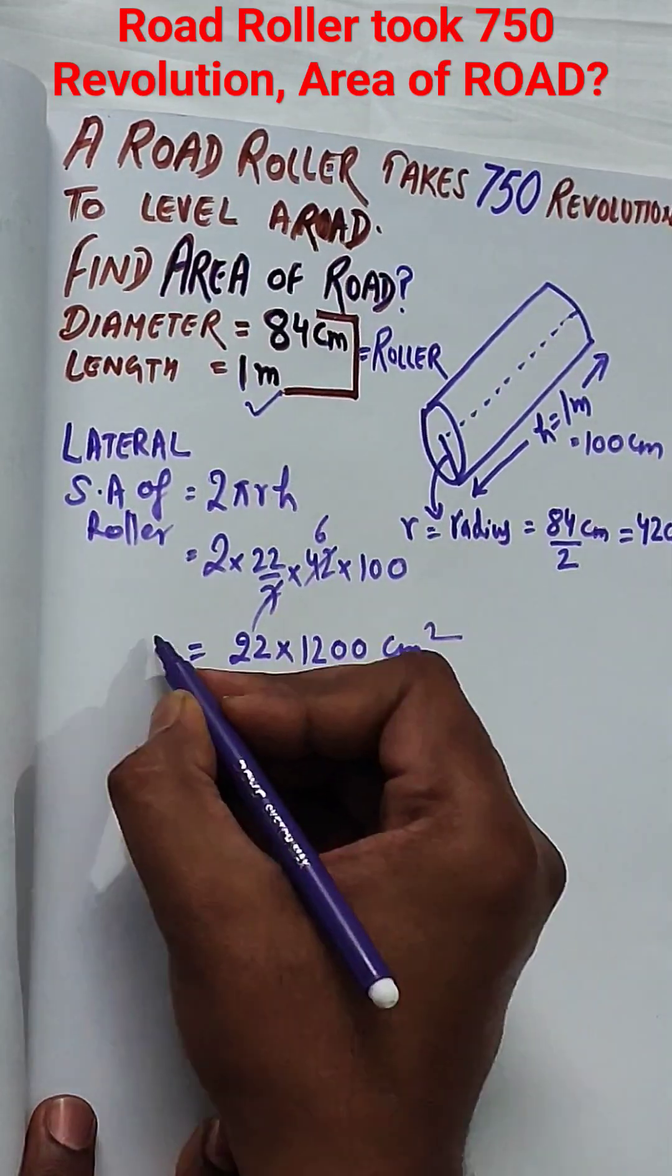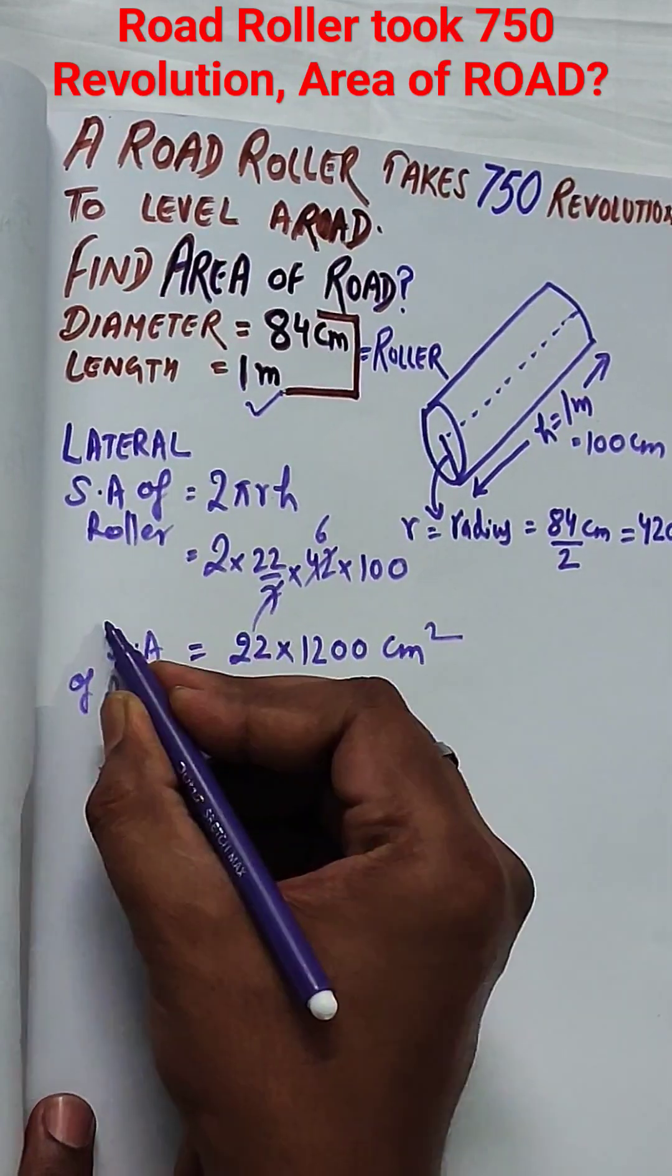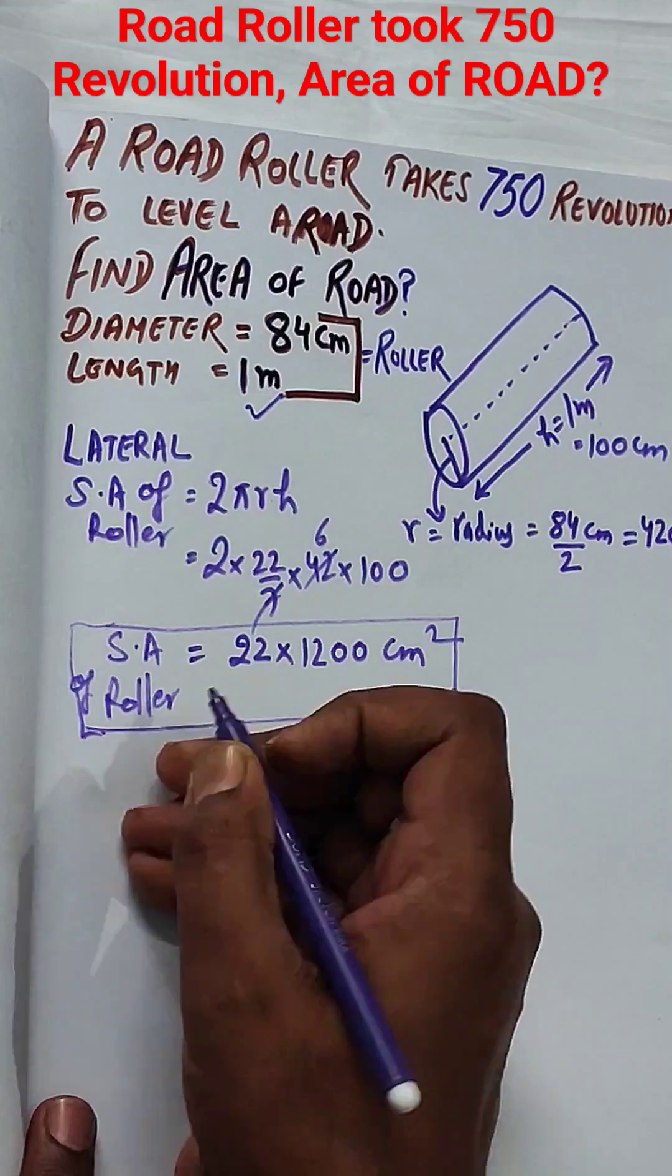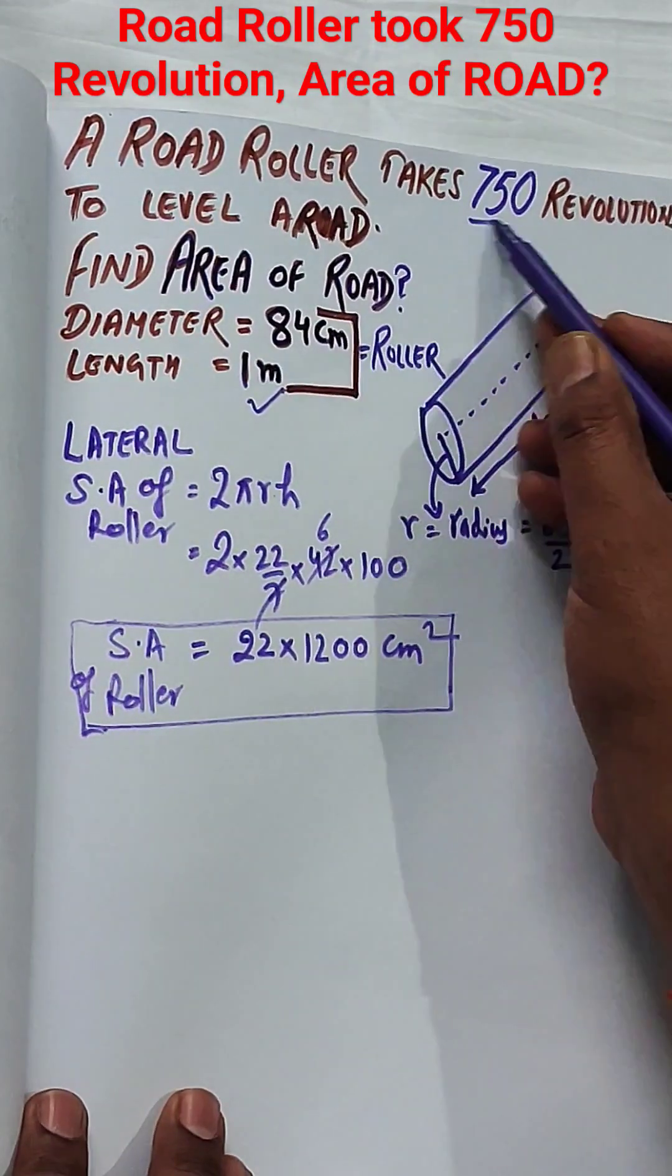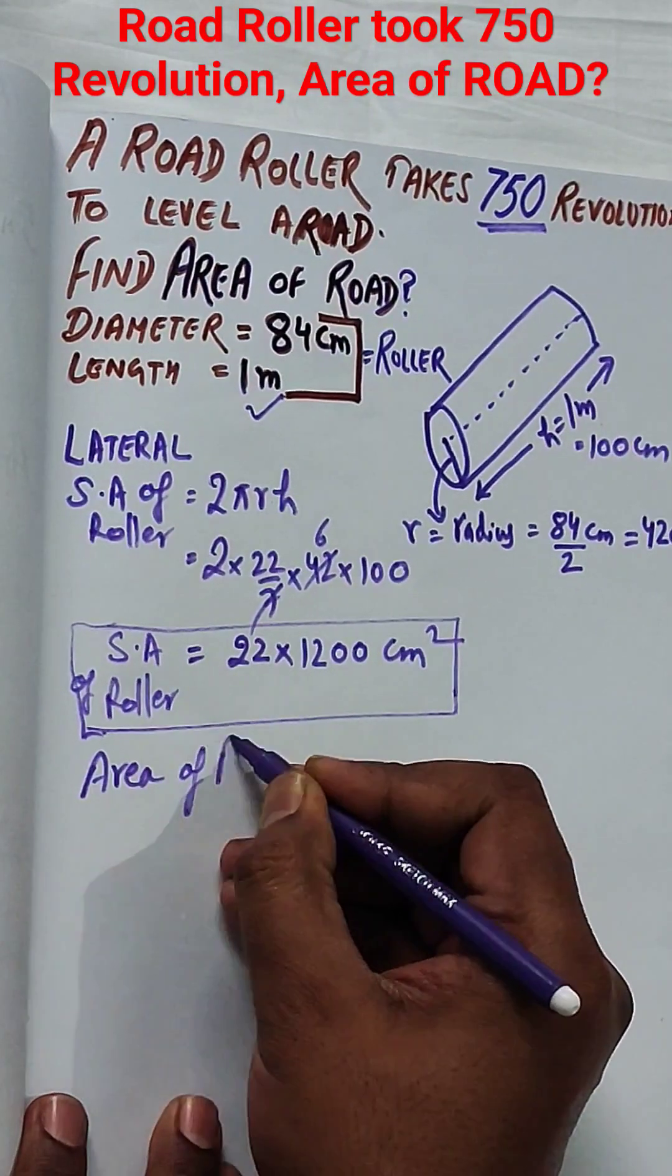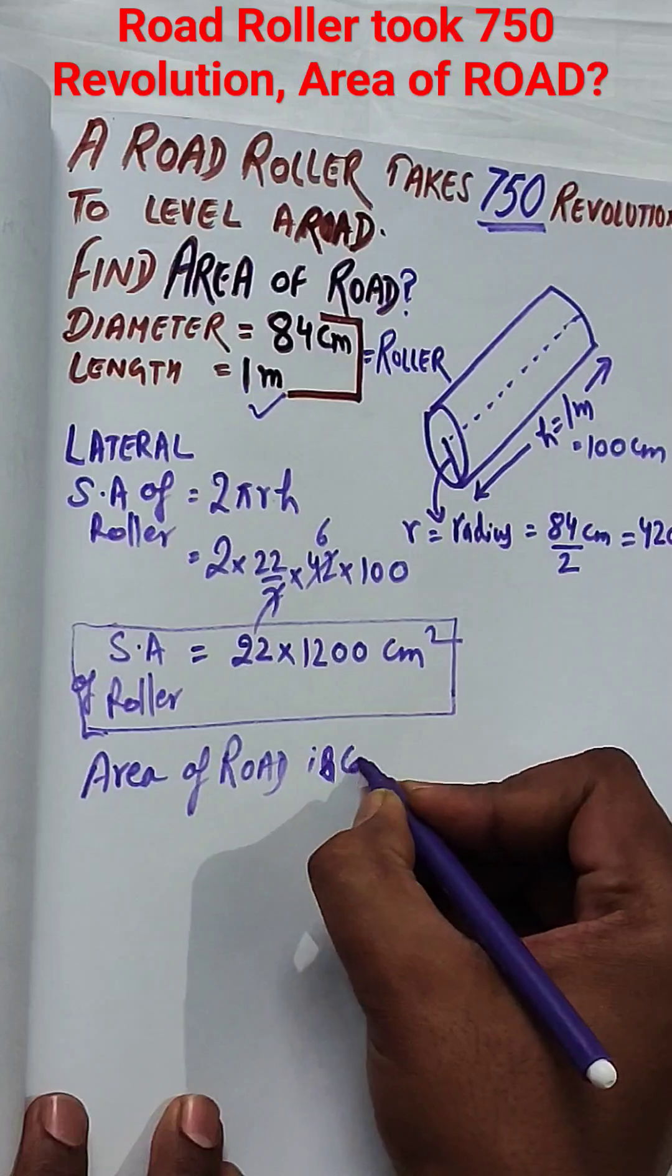We know that when the roller rolls on the road, it's the lateral surface area of the cylinder which levels the road, or which makes the road. So we will calculate the lateral surface area of the cylinder.